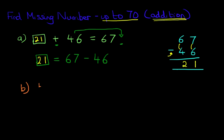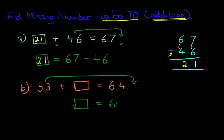Here we're going to do 53 plus something equals 64. Now again, what we can do is take the 53 and move it across to this side. Now if we do that, the question can then be rewritten as follows: something equals 64 minus 53.